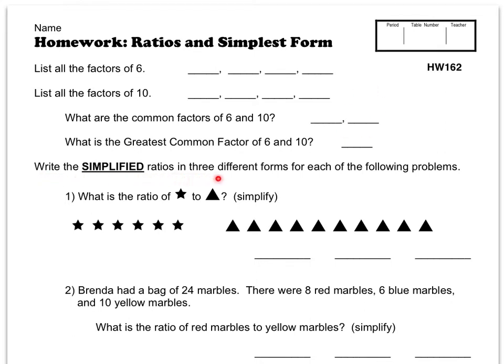Here it says write the simplified ratios in three different forms for each of the following problems. What is the ratio of stars to triangles? You don't write, if it was say 10 and 20, you don't write 10 to 20. No, you have to write 10 colon 20, 10 over 20, and 10 to 20. But those aren't the actual answers, you'll have to figure this out for yourself on that number one.